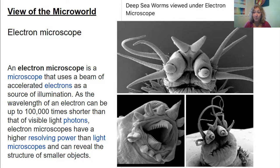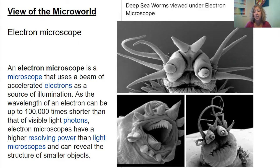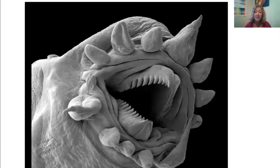Look at these deep sea worms viewed from an electron microscope. In the depths of the ocean, there are worms too tiny for us to see, but when you look at them, they look like stuffed animal creatures from the Muppets. So many artists and scientists and people in the medical field use the electron microscope. Here is a close-up view of a sea worm — it doesn't even look real and is very creepy.